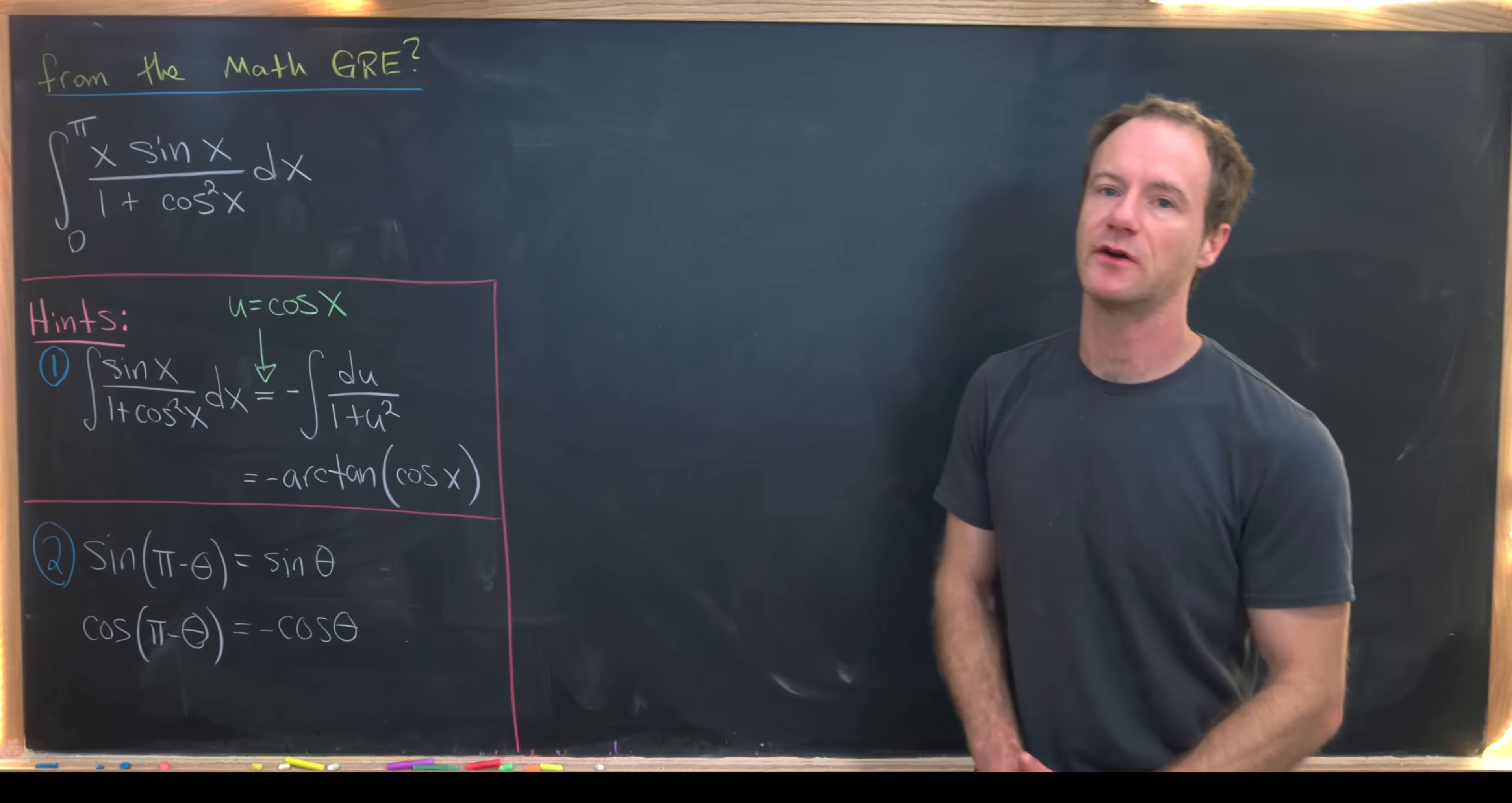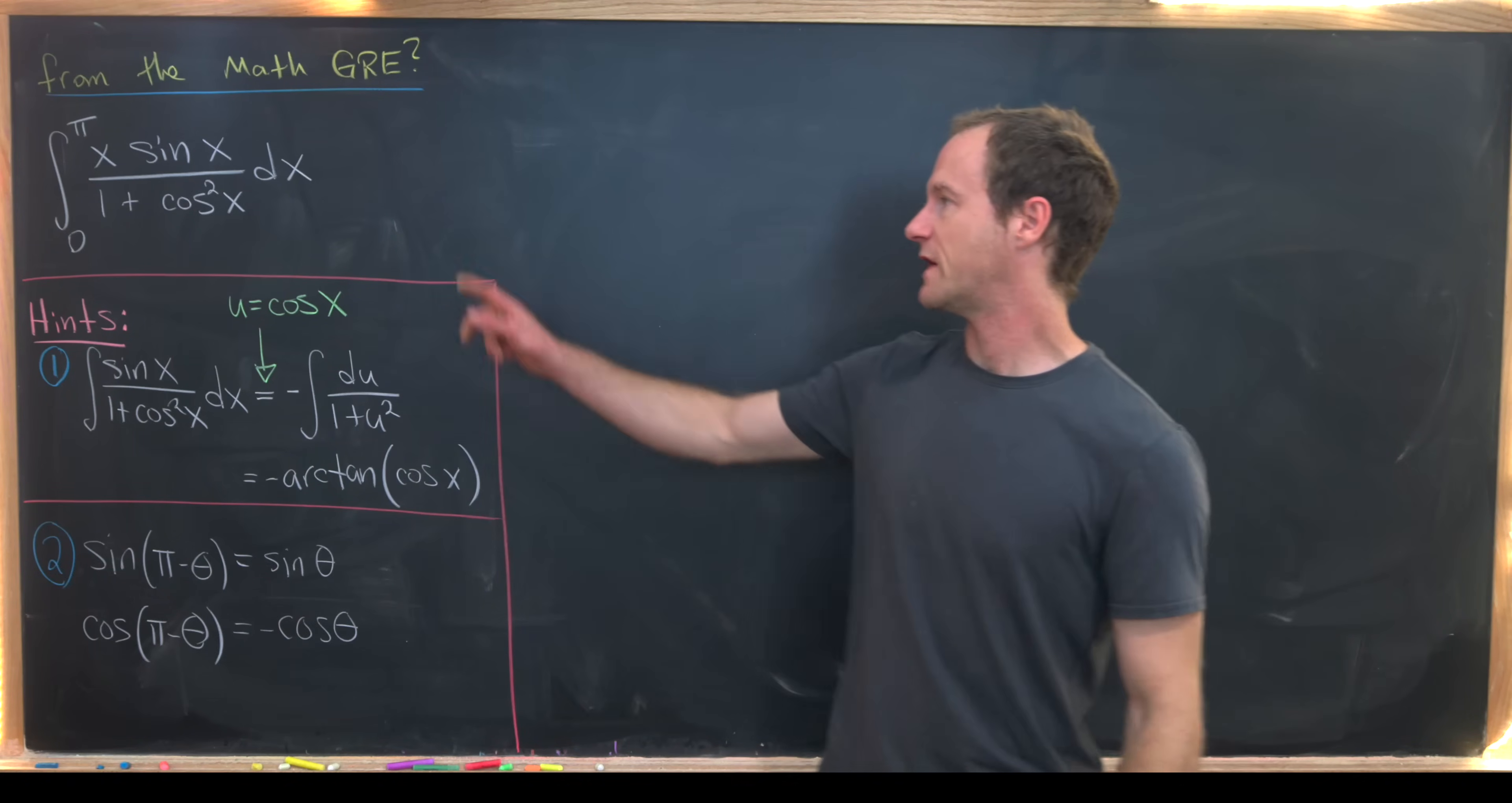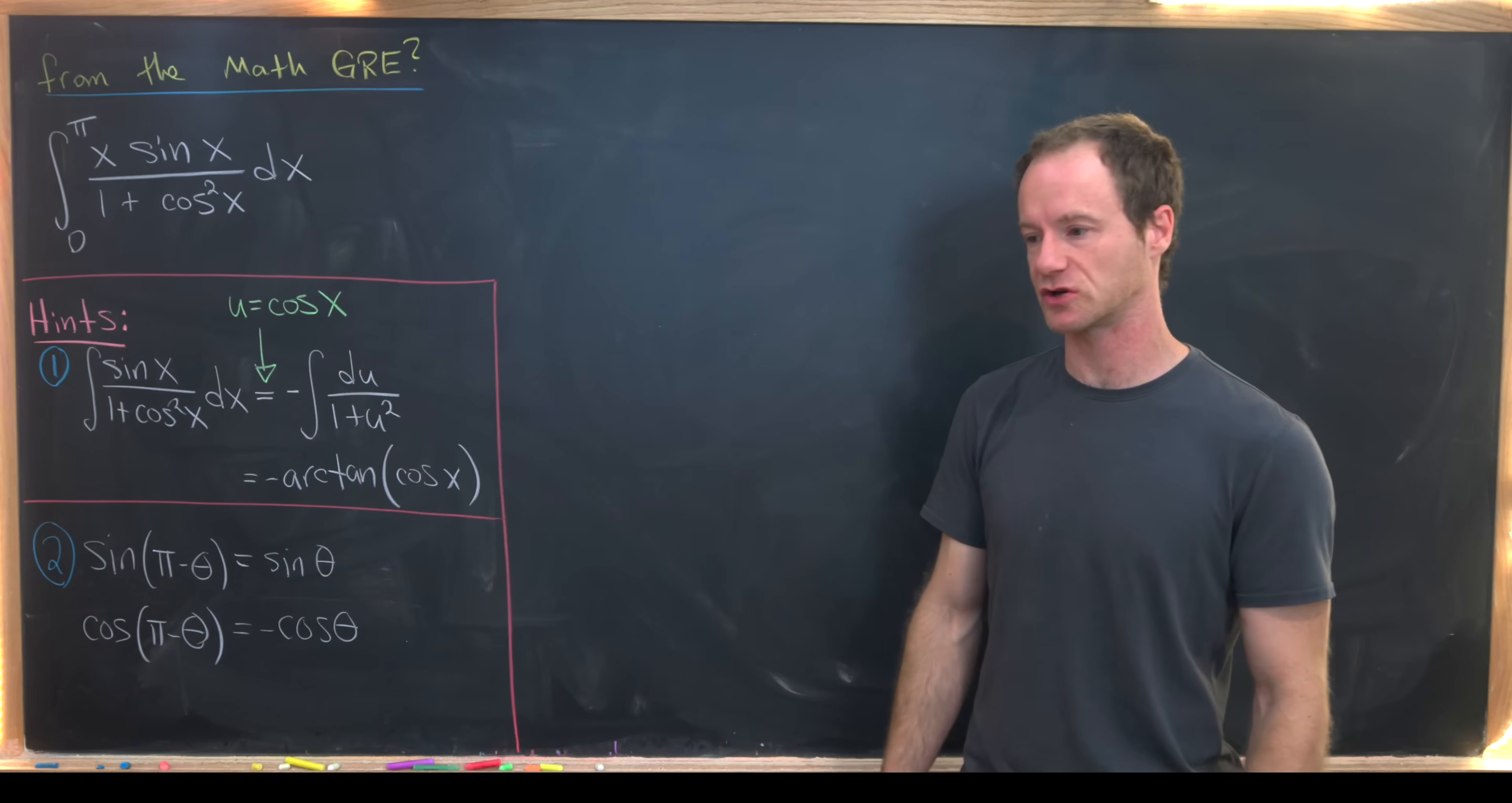Here we've got a nice integral that appeared on the math subject test for the GRE, although I'm sure it's in a lot of different places as well, because integrals like this are pretty commonplace. So let's see what we've got. We have the integral from zero to pi of x times sine of x over 1 plus cosine squared of x, and I'm going to go through a couple of hints that are built into the structure of this problem before we look at the solution.